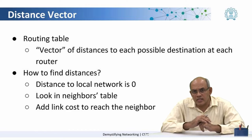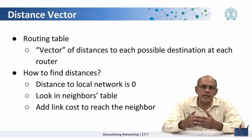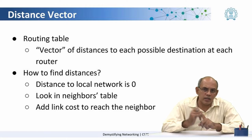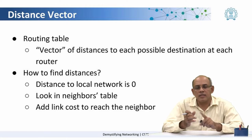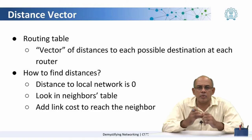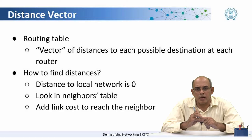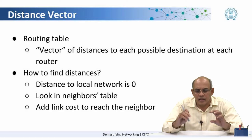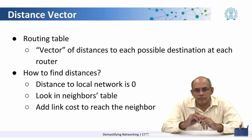So the question is how to find these distances. A very simple idea is used: the distance to the local network is 0. The second point is that when routers exchange tables, they look in their neighbors' routing tables and add the link cost to reach the neighbor.